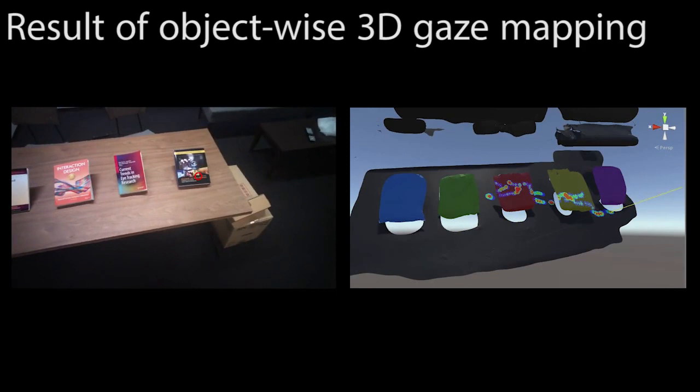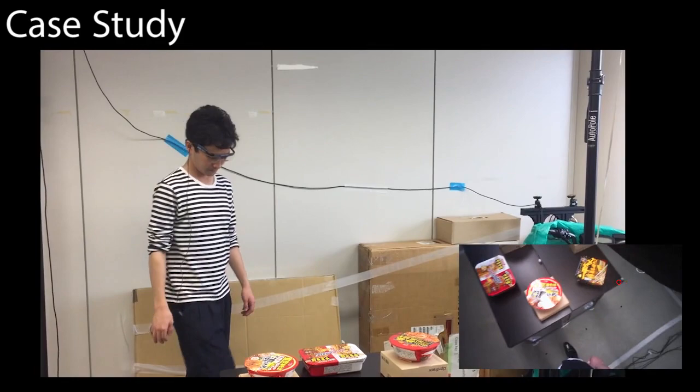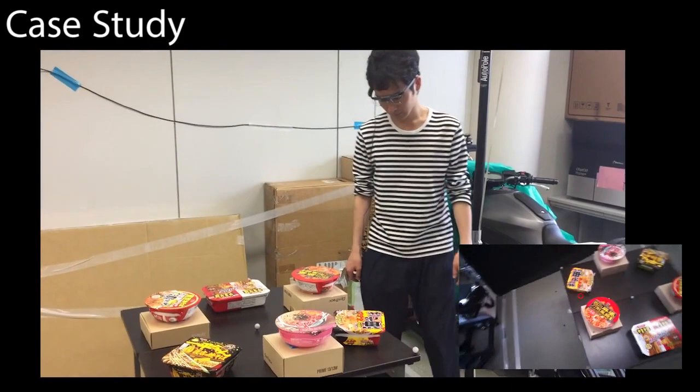Now, we can know object-wise gaze positions. For marketing applications, the system automatically segments important objects and counts users' attention to the objects for ranking popular objects.